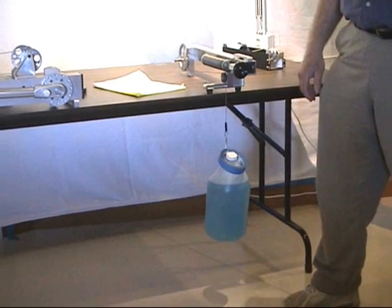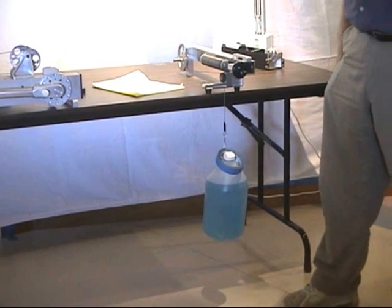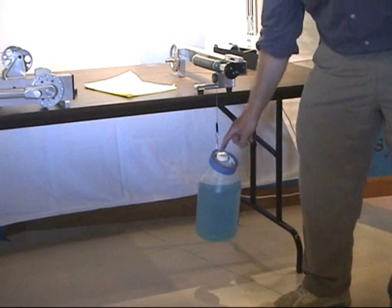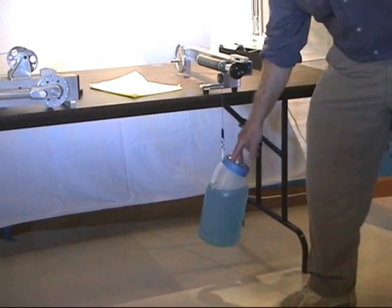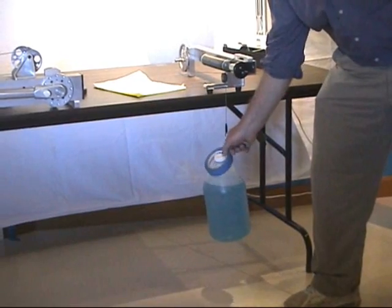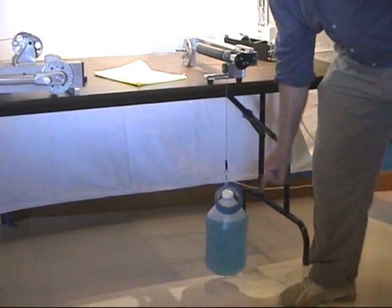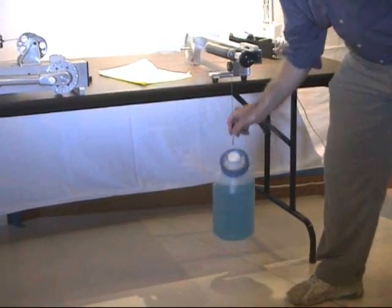This is the linear counterbalance mechanism. And right now it's adjusted with the gallon of water here, dyed nice and blue, with a roll of tape on it. So you can see that it stays balanced over its range of motion.